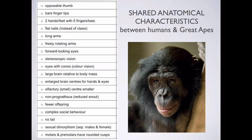Our fingertips — if you look at your fingertips, yours are bare, and so are the fingertips of all of the great apes; they don't have fur on their fingertips. We both share the fact that we have two arms and two legs. What we use those arms and legs for is different, but we both have two arms and two legs, and each of our limbs have five digits — five fingers or five toes.